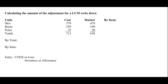In this example, I have three different types of inventory: skis, boots, and poles — it's that time of year. I'm showing you what cost was for each of these items and what market was. The market test has already been done, and these are the resulting market figures. These things are totaled and ready to go.